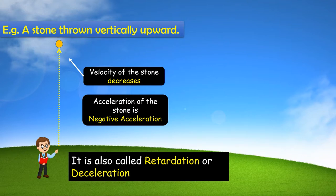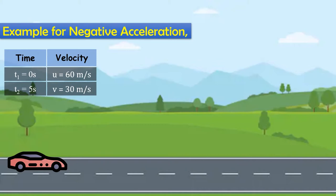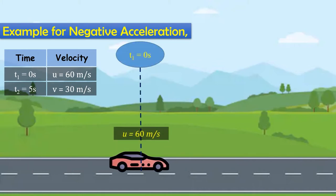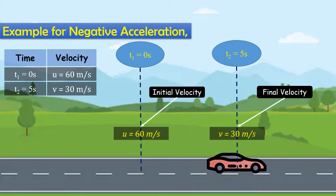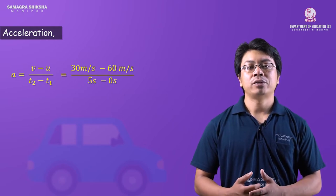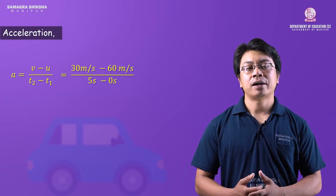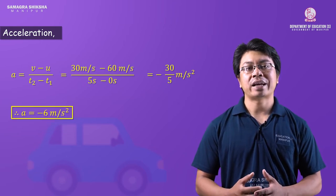Numerical example for negative acceleration: at t1 = 0 seconds the velocity is 60 m/s, at t2 = 5 seconds the velocity is 30 m/s. Acceleration = (v − u) / (t2 − t1) = (30 − 60) / (5 − 0) = −30 / 5 = −6 meters per second squared. The acceleration is negative.